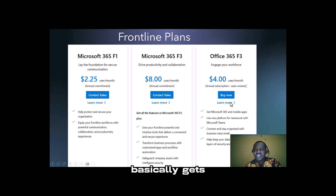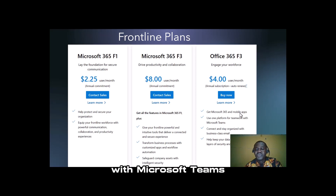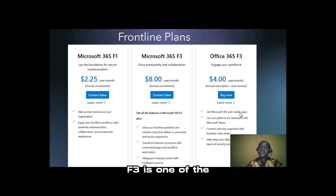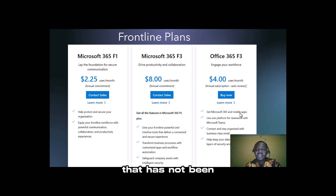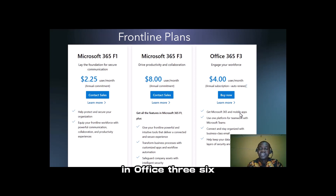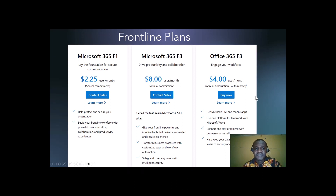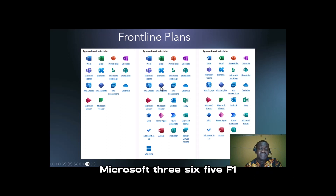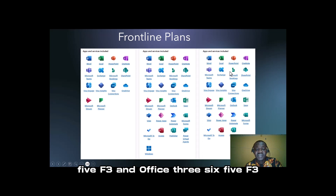Office 365 F3 gets you mobile apps, uses one platform for teamwork with Microsoft Teams, and lets you connect and stay together using business-class emails. Office 365 F3 is one of the Office 365 subscriptions that are still available and has not been duplicated like we saw in Office 365 E3 and E5. These are the apps and services available to Microsoft 365 F1, Microsoft 365 F3, and Office 365 F3.